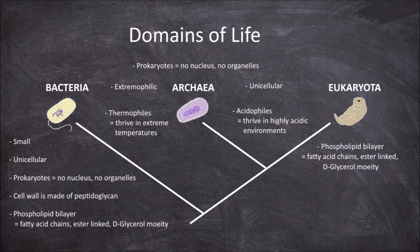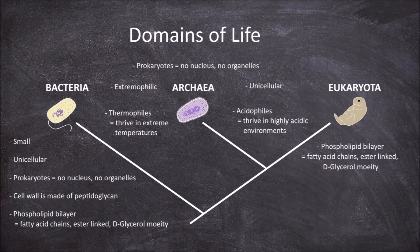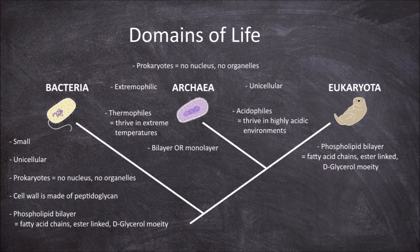In archaea on the other hand, the phospholipids can form a bilayer, but are also sometimes found to form a monolayer. The structure of the phospholipid is also different. They have isoprene chains instead of fatty acid chains.